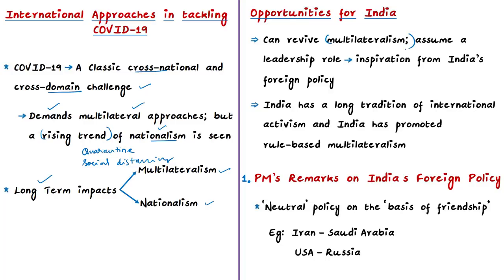The author tells that both leadership and statesmanship are in short supply at present. When the 2008 economic crisis happened, the G20 grouping was born, which was led by the United States. In this context, the author says the present COVID-19 pandemic gives an opportunity to India to revive multilateralism. India can assume an effective leadership role, and the inspiration should come from India's abundant experience in foreign policy.